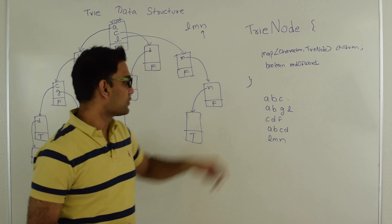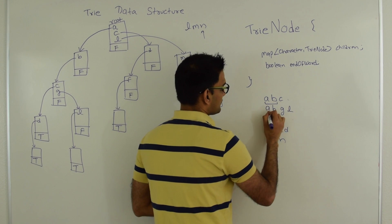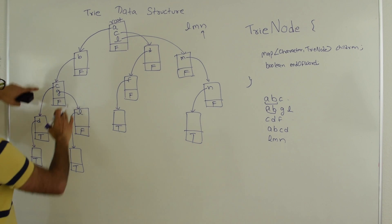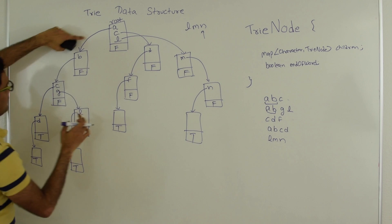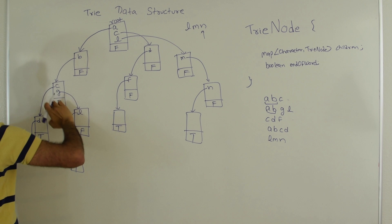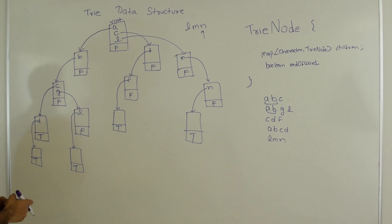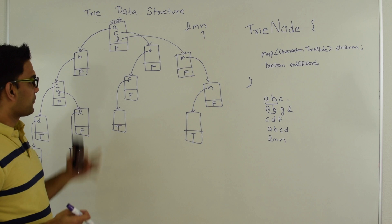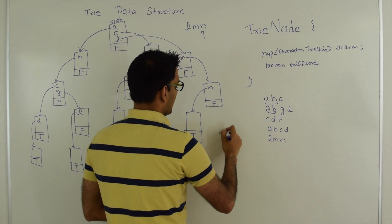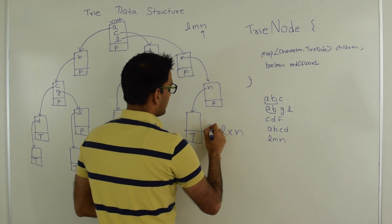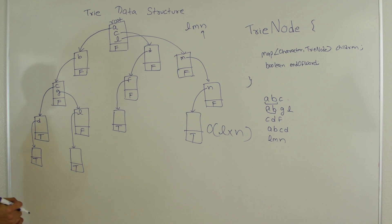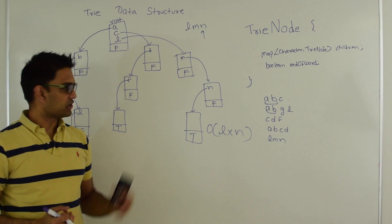As you can see, if two words have the same prefix — for example ABC and ABGL — they share common ancestors and bifurcate from that point. The time complexity for insertion is straightforward: if the average length of a word is L and the total number of words is N, then the time complexity is O(L × N). Next let's look at how to do a search in this Trie.